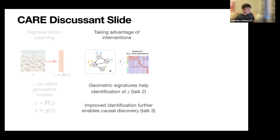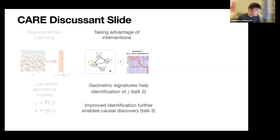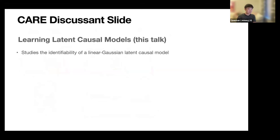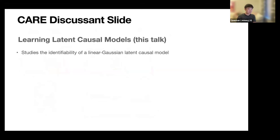In week two, we heard about how interventional data combined with a polynomial generator function can leave a geometric signature on the data that helps us identify it. The paper discussed in week three extends the applicability of this polynomial generator function, simultaneously using interventional data for causal reasoning — in particular using theory from interventional causal discovery to derive conditions under which a latent causal DAG can be recovered.